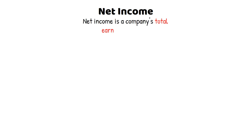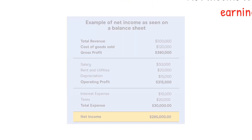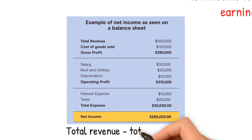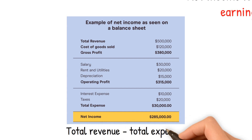Net income is a company's total earnings or profit after all expenses, taxes, and other deductions have been subtracted from its revenues or total income. It is often called the bottom line or net profit and is a vital measure of a company's financial performance. Net income is calculated by subtracting the company's expenses from its total revenue for a period, such as a quarter or a year.